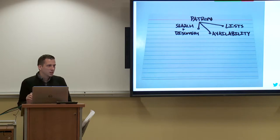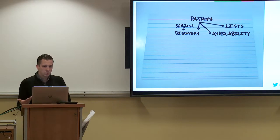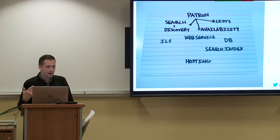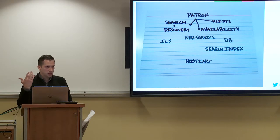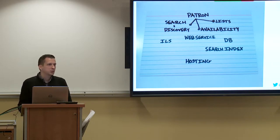This is a hyper-simplification, but we can say one of our users is a patron for ViewFind, and one of their needs is to search and discover. Another is to create lists of books. Another might be to check availability. And we could go a step further and say there are things we need in order to fulfill those needs — things like connection to the ILS, having a database, having a search index, and underneath it all some sort of hosting system, which might be a physical server or something like it.